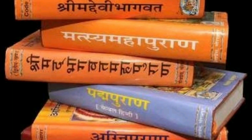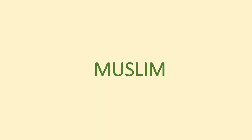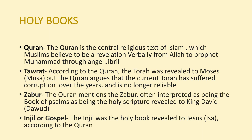The Agamas are divided into three sects: the Vaishnava Agamas, the Shaiva Agamas, and the Shakta Agamas. Now let us look at the scriptures of Muslims.